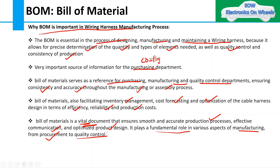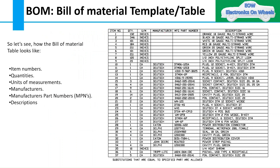Moving to our next topic, that is the bill of material example. As you can see on the right side, this is the format or template for bill of material, which contains item numbers, quantities, units of measurement, manufacturers or supplier for that component, manufacturer or supplier part numbers (MPNs), and descriptions of that component. The question is: how do we get this information from 2D drawings?